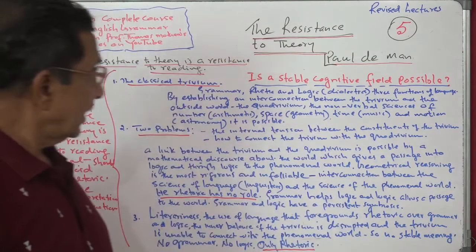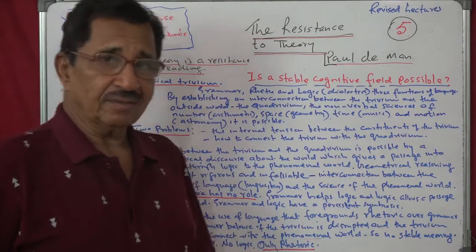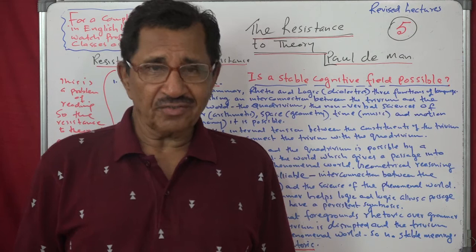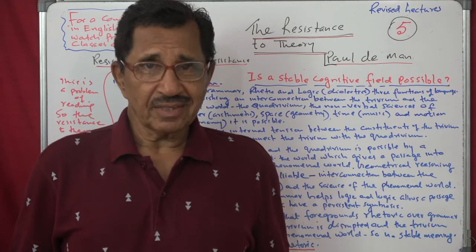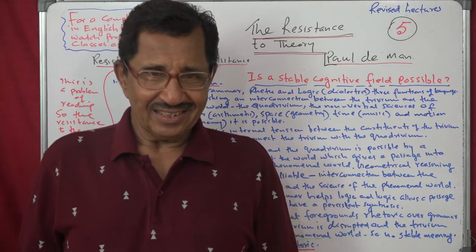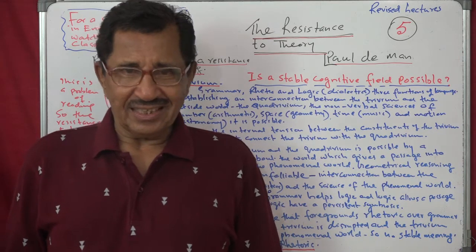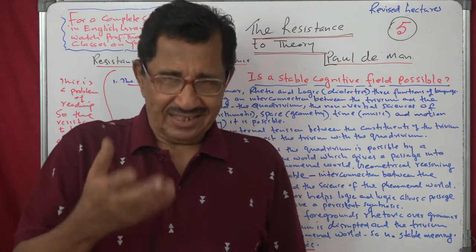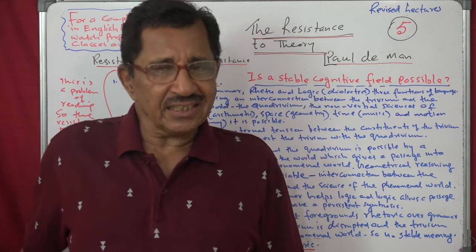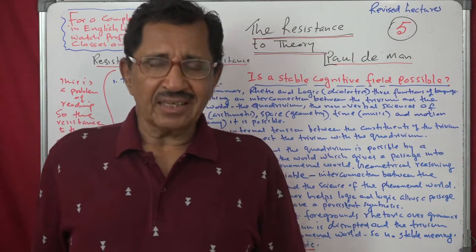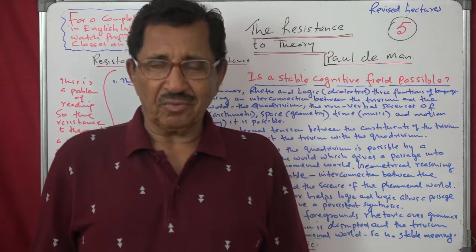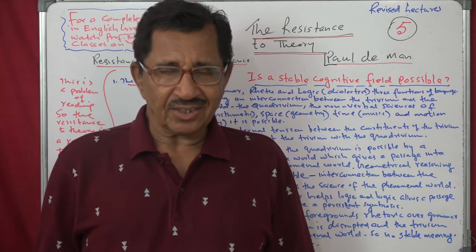So the next question is: is a stable cognitive field possible? Can language provide a stable cognitive field? The answer is yes and also no. Because in the last class we referred to the Trivium. The Trivium is the most ancient, the most familiar, and the most general model of language — the model of the science of linguistics.